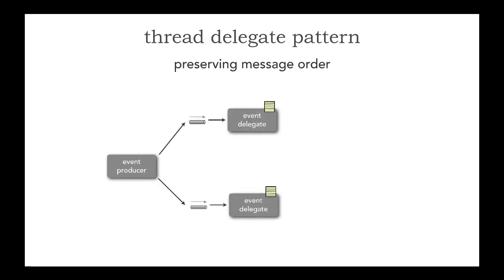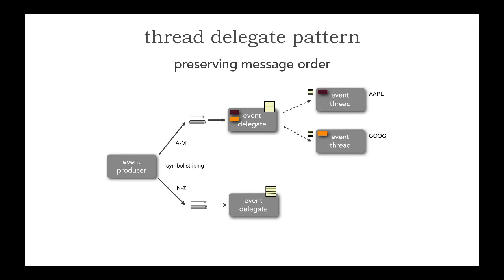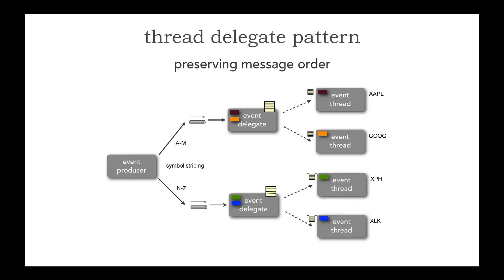We can actually use something called striping. I'm going to stripe the symbol so that I can have hundreds or thousands of event delegates and still preserve message order. For example, all symbols A through M go through the top path, and N through Z go through the bottom. Across the top path, I can now ensure the order of all Apple trades and all Google trades. On the bottom path, I can ensure all Spider pharmaceutical and Spider technology stocks — the XLKs. I can stripe on the beginning of each symbol, giving me 26 event delegates, which in turn has thousands of event threads. I can even start striping on AA, AB, AC, AD, and so on — thousands of event delegates with thousands of threads — and you can see how this scales to process thousands of messages concurrently in the right order.